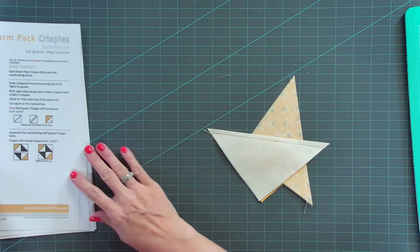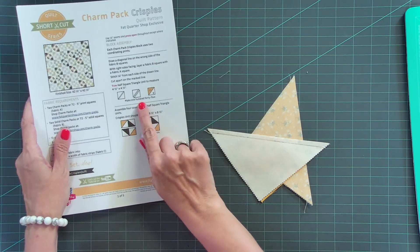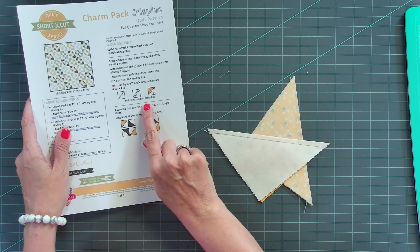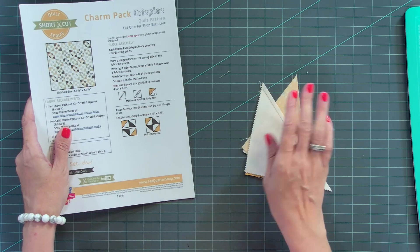And you're gonna want to follow the instructions for how many to make. Since we have four different size options, there's a different amount on each. But if you're making the lap size, you're gonna make 144.